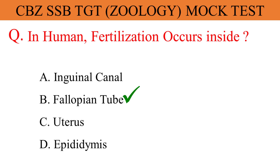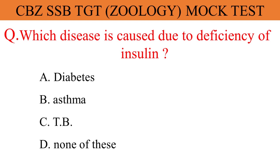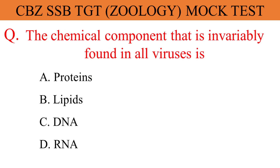Which disease is caused due to deficiency of insulin? And the correct answer is option A. Diabetes. The chemical component that is invariably found in all viruses — and the correct answer is option A. Proteins.